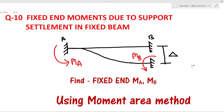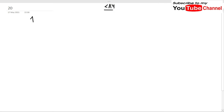Support settlement is a very important topic. If the support of a beam settles by a small amount delta, this settlement can induce a very large amount of fixed end moment, or very large moments in the beam. Let us see how we will find out the fixed end moment for this particular problem.